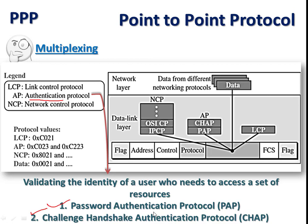Authentication is an important process when unknown points are accessing connections. Two sub-protocols are used: Password Authentication Protocol (PAP) and Challenge Handshake Authentication Protocol (CHAP). In PAP, the user sends a username and password to the server, which validates and authorizes access. In CHAP, a three-way handshake is used — the system sends a challenge to the user, the user performs a task and sends the result, and if the result matches, access is granted.